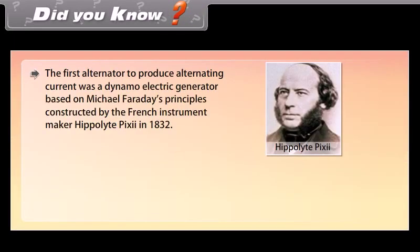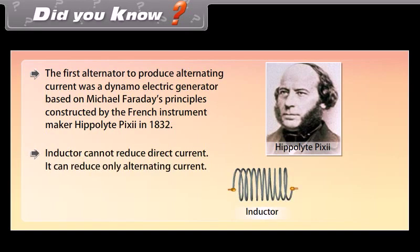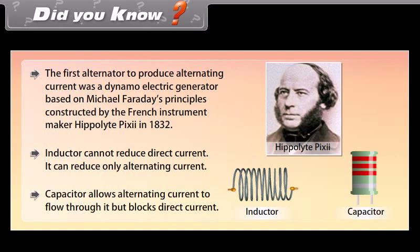Did you know? The first alternator to produce alternating current was a dynamo electric generator based on Michael Faraday's principles, constructed by the French instrument maker Hippolyte Pixie in 1832. An inductor cannot reduce direct current; it can reduce only alternating current. A capacitor allows alternating current to flow through it but blocks direct current.